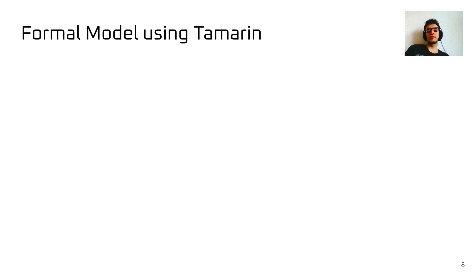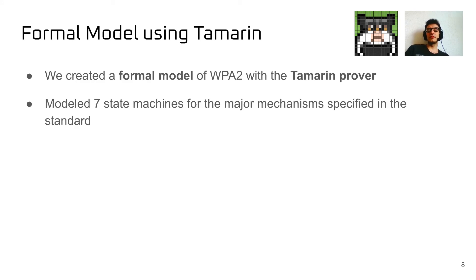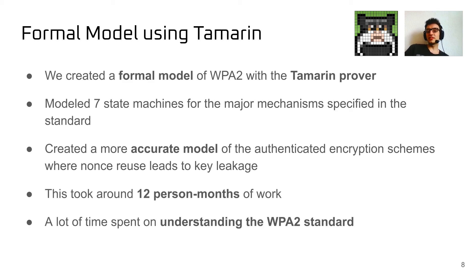Now this is where our work comes in. To formally verify the WPA2 model, we created a formal model of WPA2 with the Tamarin prover. To do so, we modeled the state machines specified in the WPA2 standard — the four-way handshake, the group key handshake, and everything else — all defined as state machines. In total, there are seven of those state machines. To capture key leakage as a result of nonce reuse, we refined our Tamarin model with additional, more accurate rules to faithfully capture this and to have a more realistic model of cryptography. Overall, we estimate this took twelve person-months of work, and a large portion of that time was spent understanding and reading the WPA2 standard, which is a 3,000-page document. Both Benjamin and I were novice Tamarin users and did not have any prior experience with WPA2, so if you are trying to verify a protocol you know better or if you are already experienced with Tamarin, your mileage may vary.